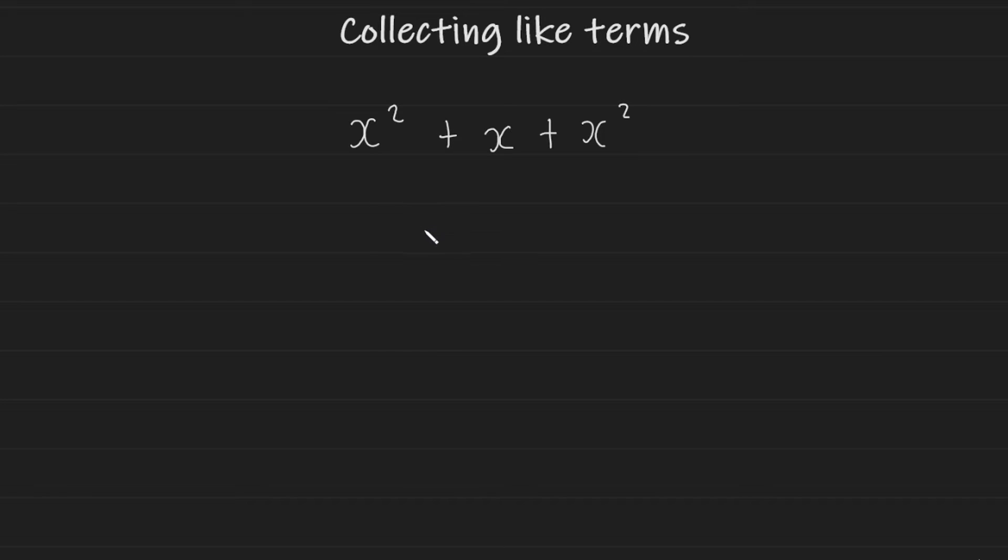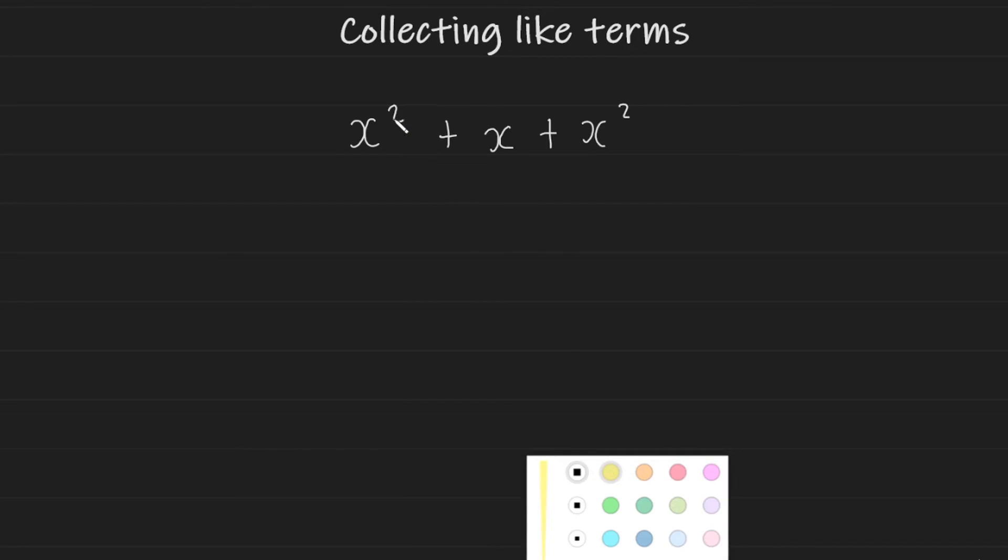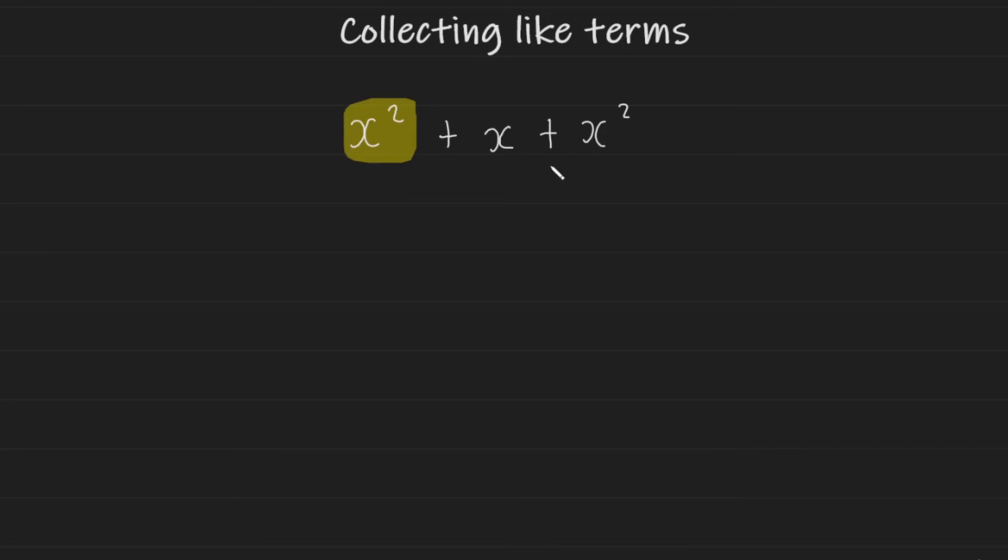But you can add them if they do have the same powers. So how would we collect like terms in this instance? I'm going to highlight all of my terms that have an x squared in them. So it's going to be x squared plus another x squared. And an x squared plus an x squared gives us two lots of x squareds. We then have a plus x remaining, and there are no other terms with x in there, so we can just write it down as plus x. And this is the fully simplified version of the above expression.